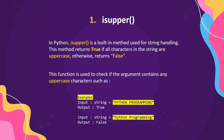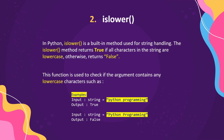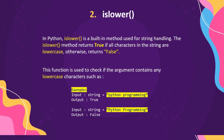The second method is islower. In Python, islower is a built-in method used for string handling. The islower method returns true if all characters in the string are lowercase, otherwise it returns false. For example, with the input string 'python programming' where all characters are lowercase, it returns true. If even one character is uppercase, it returns false.